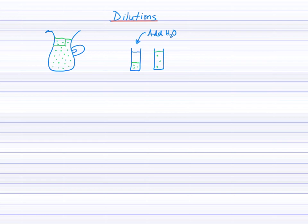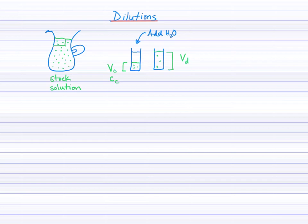This is the idea of dilution. We have a certain concentration of a concentrated solution. In chemistry, we call the concentrated solution the stock solution — the one that we're going to dilute. We've used a particular volume of that concentrated solution, which has a certain concentration in moles per liter. After adding water, we now have a larger volume of a diluted solution, and there will also be a concentration associated with that diluted solution.